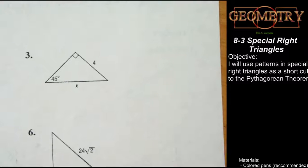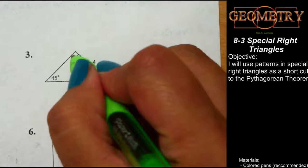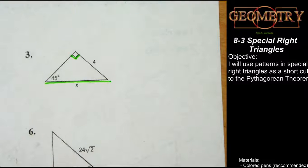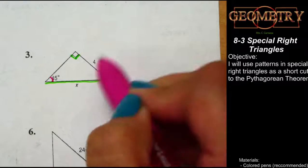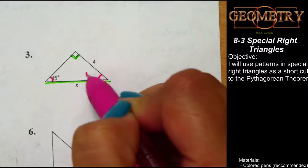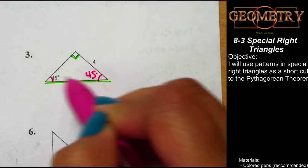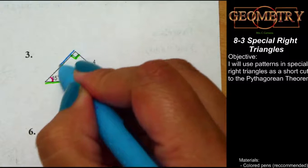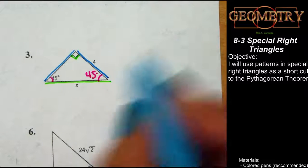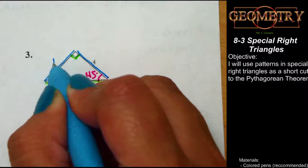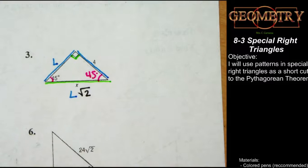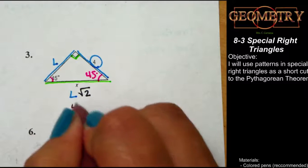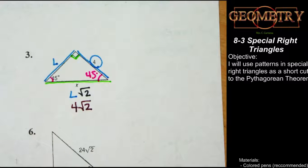Let's do another one, very similar. Move over to number three on your study guide. Notice again we have a right angle, which means this is our hypotenuse. We have one angle of 45 degrees, and triangle angle sum tells us the angles must add up to 180, which means the other acute angle is also 45 degrees — so we have a 45-45-90 right triangle. According to our pattern, to find the hypotenuse I take the measure of a leg and multiply it by the square root of two. The measure of a leg is four, so the hypotenuse is four times the square root of two. That's it — don't overthink it.